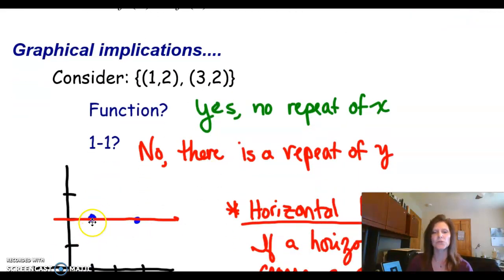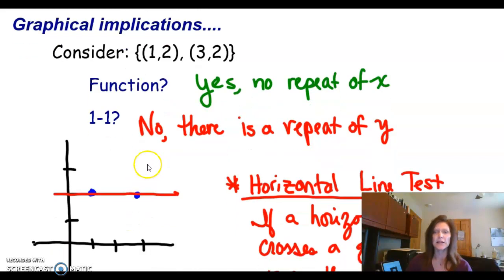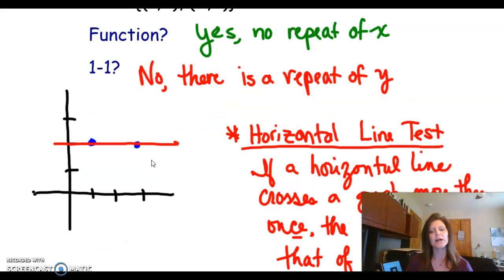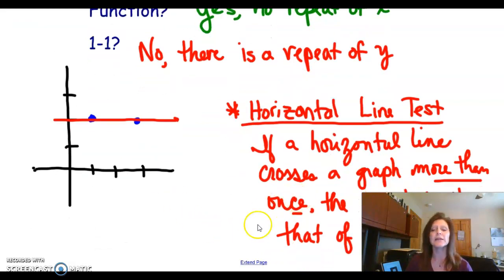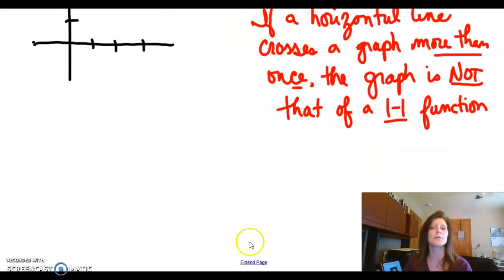If we were to graph those two points, (1,2) and (3,2), and connect them, what we would see is a horizontal line. So now we have a graphical test. The vertical line test tells us if we have a function or not. The horizontal line test will tell me if the graph of that function is indeed a one-to-one function.